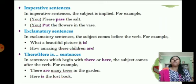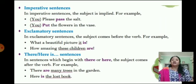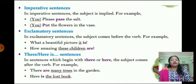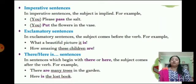When we have 'here' or 'there' in a sentence, the subject comes after the verb. For example, 'There are many trees in the garden' — 'many trees' comes after 'are,' so 'many trees' is the subject. 'Here is the lost book' — 'is' is the helping verb, and 'the lost book' is the subject, coming after the verb.